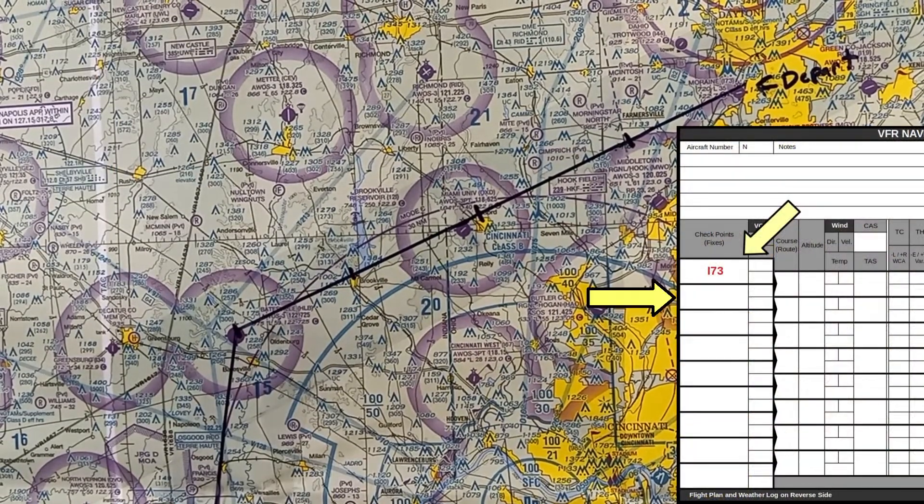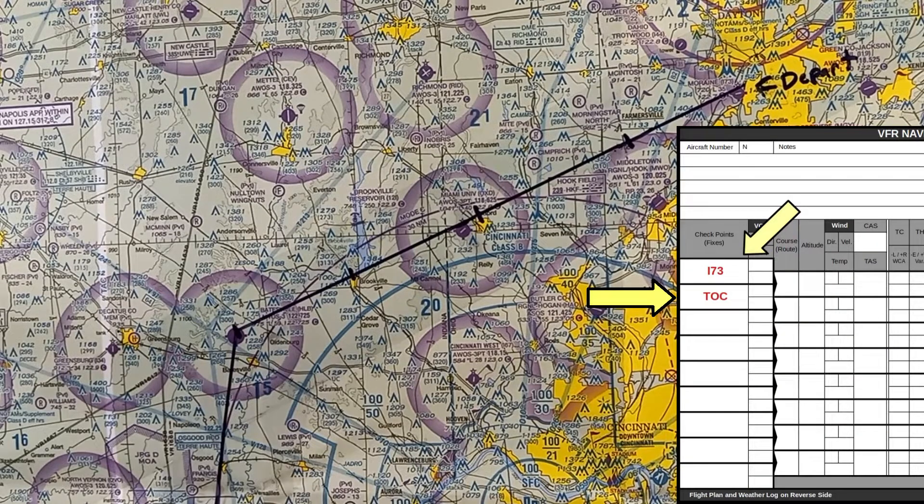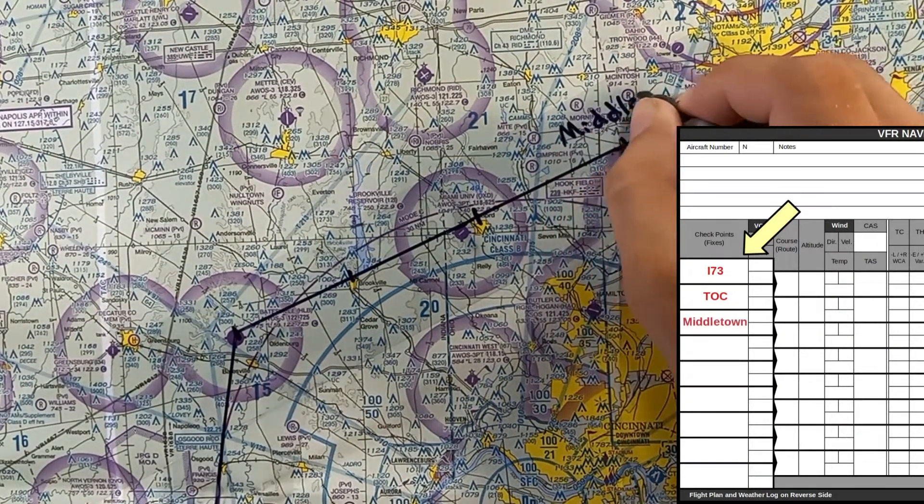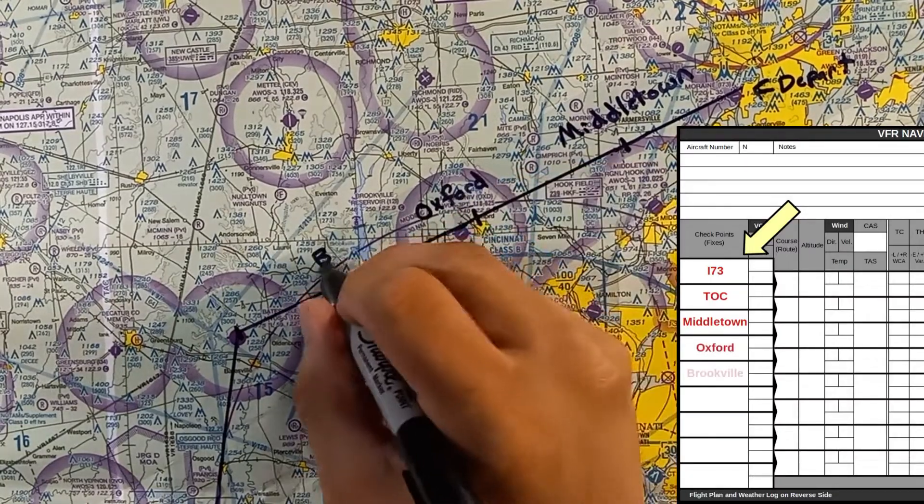The first leg of your flight plan should take you to Top of Climb, which we'll locate later. Our route keeps us on a constant course as we pass Middletown, Oxford, and Brookville.